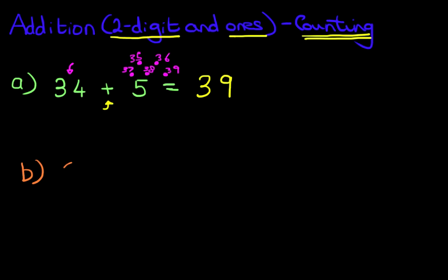This time we have 67 plus 7. What is 67 plus 7? First thing we do is check the sign. It is plus addition. We're going to add the numbers together. And which is the larger number? Well the larger number is 67.